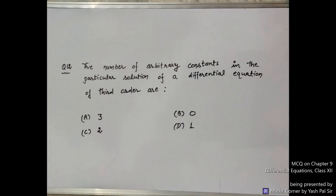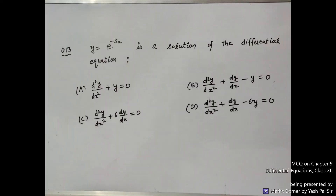Question number 13: y = e^(−3x) is a solution of which differential equation? Option A: d²y/dx² + y = 0. Option B: d²y/dx² + dy/dx − y = 0. Option C: d²y/dx² + 6·(dy/dx) = 0. Option D: d²y/dx² + dy/dx − 6y = 0.